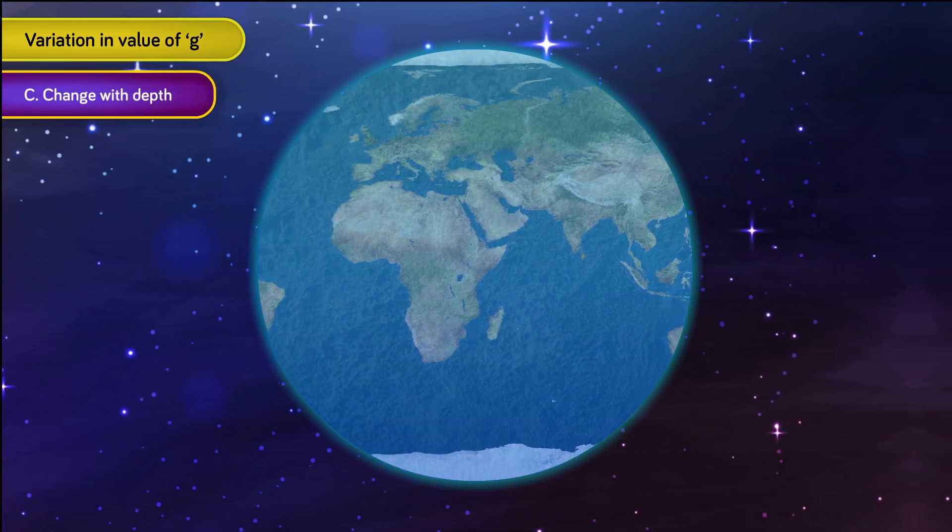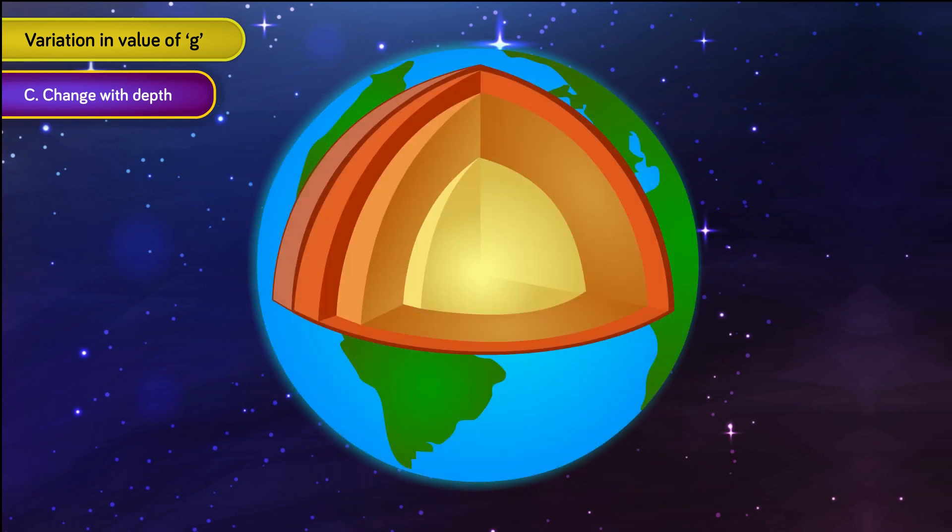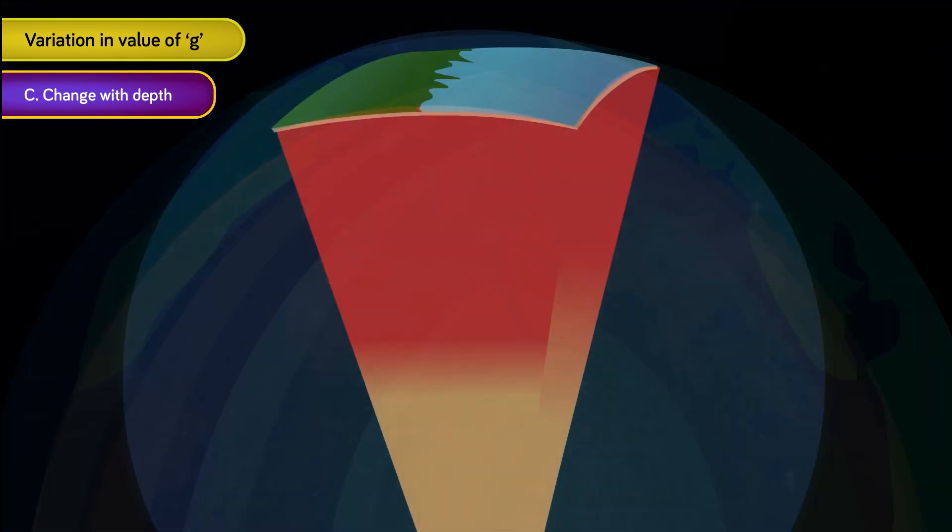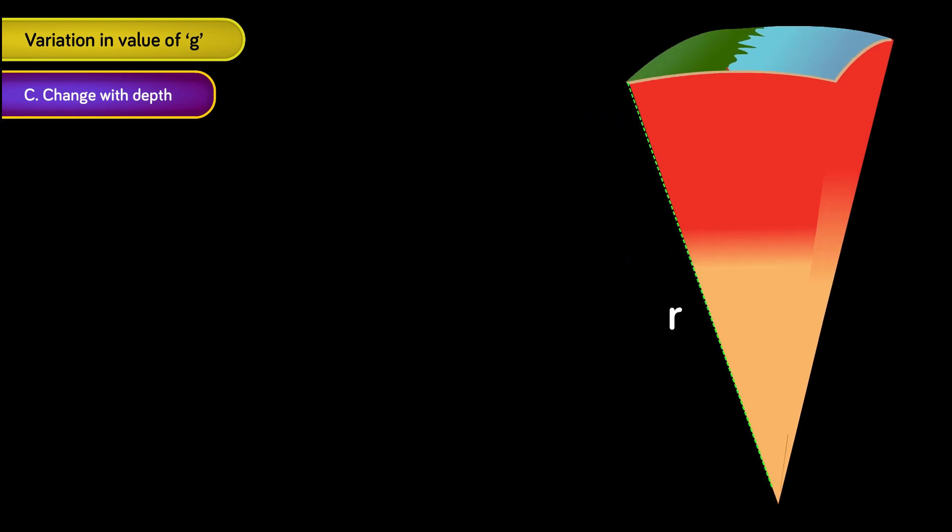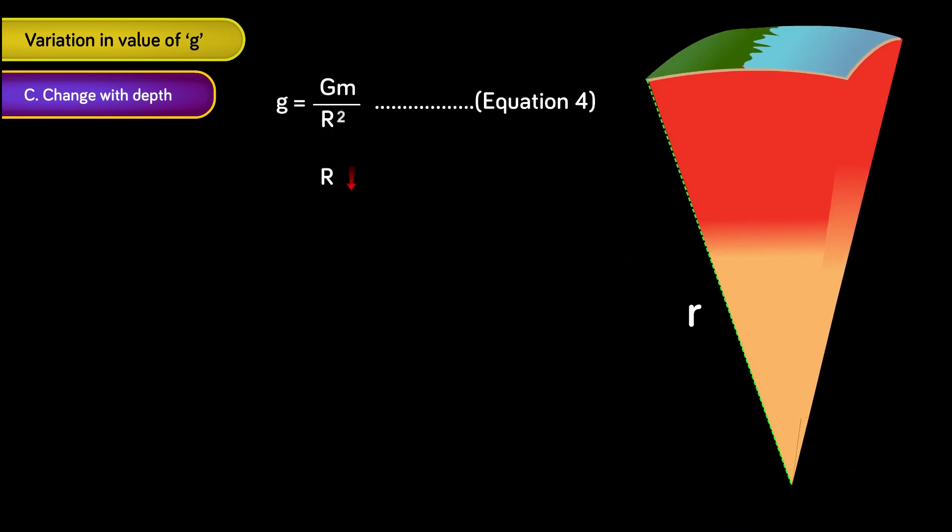Point C. Change with depth. The value of g also changes if we go inside the Earth. The value of r in equation 4 decreases, and one would think that the value of g should increase as per the formula.